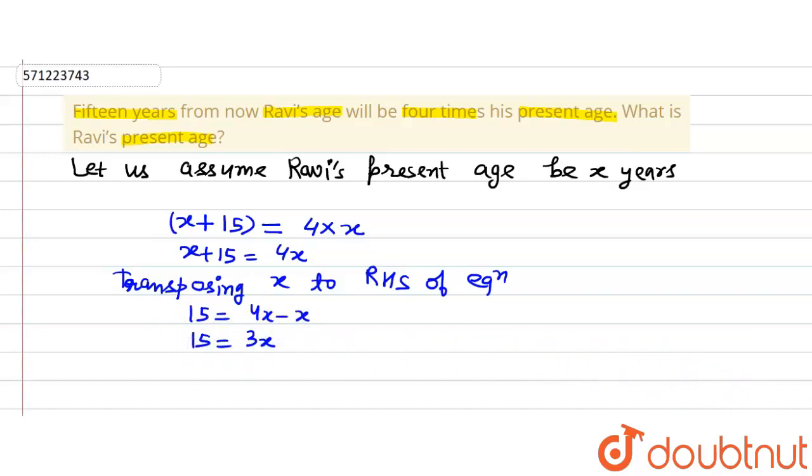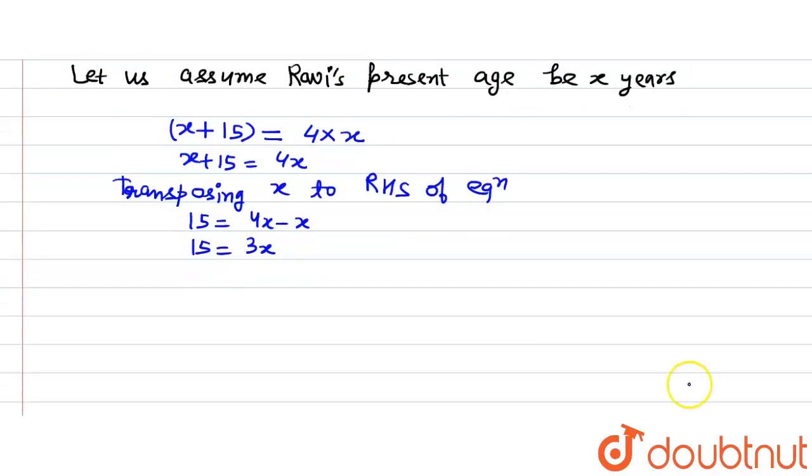And we also know that 15 is equal to 3x or 3x is equal to 15, it's the same thing. So now what we will do is we will transpose 3 to the RHS or the right hand side of the equation.